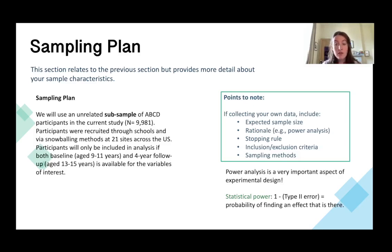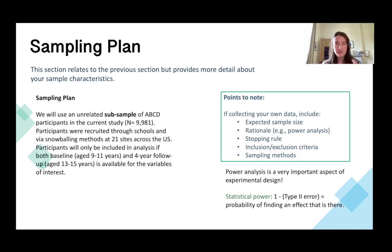Related to this are things like your stopping rule — when are you going to stop data collection — your inclusion and exclusion criteria, and how you're going to recruit the sample. For example, the ABCD study participants were recruited through schools and via snowballing methods across 21 sites. Providing this level of detail informs what factors you might want to consider when designing your statistical tests, helping you have a watertight plan that makes it much easier to execute the research project.